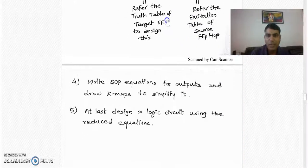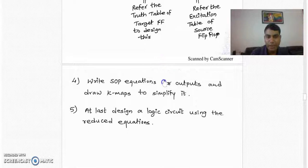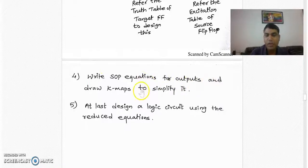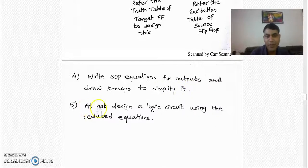After completing the conversion logic table, we write the SOP equations for the outputs and draw the K-map to simplify them. Once we get the simplified equations, in the last step we design the logic circuit using the reduced equations.